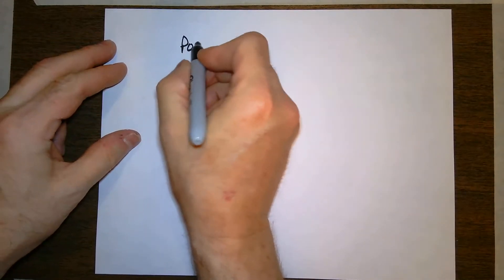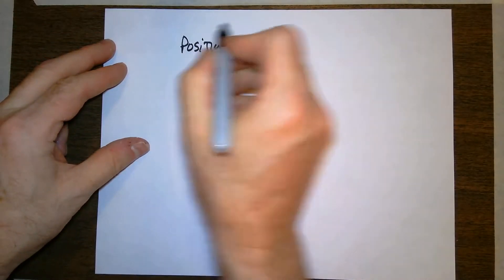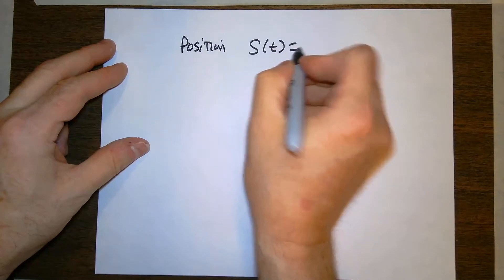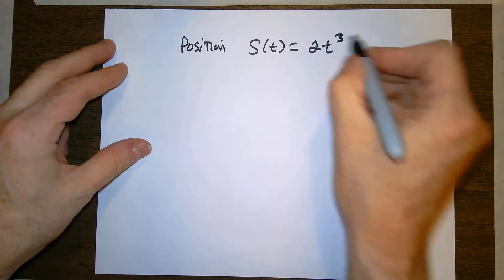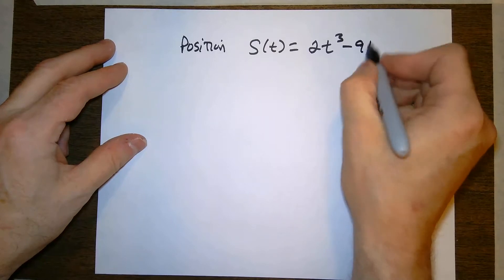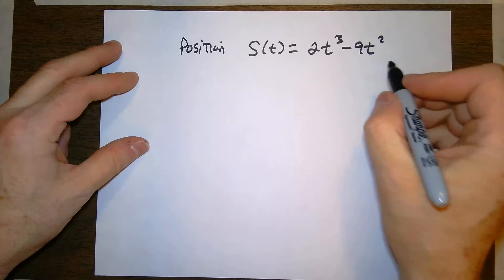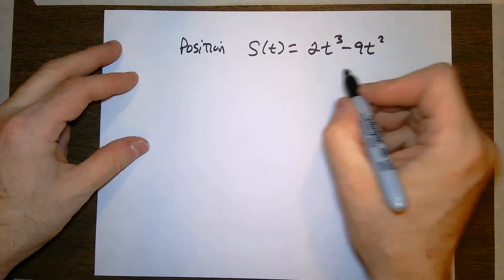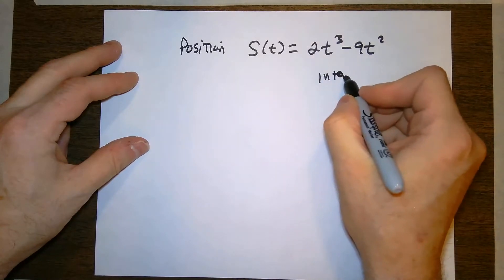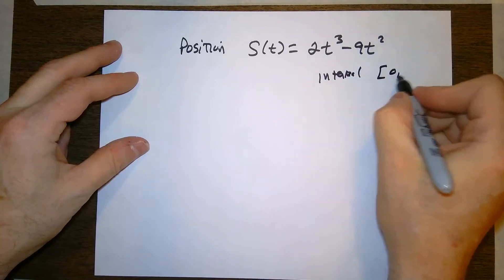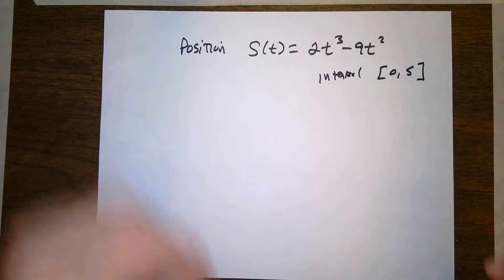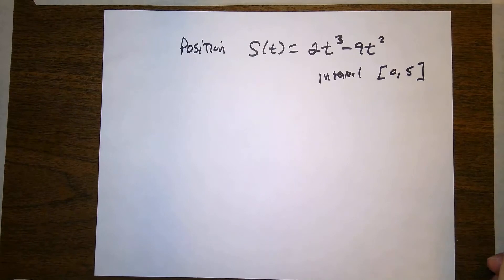All right, so let's consider a particle moving along a line and its position function s of t is given by 2t cubed minus 9t squared. And I'm going to just focus on the interval where t is from 0 to 5. We're just going to look at it over this interval from 0 to 5.